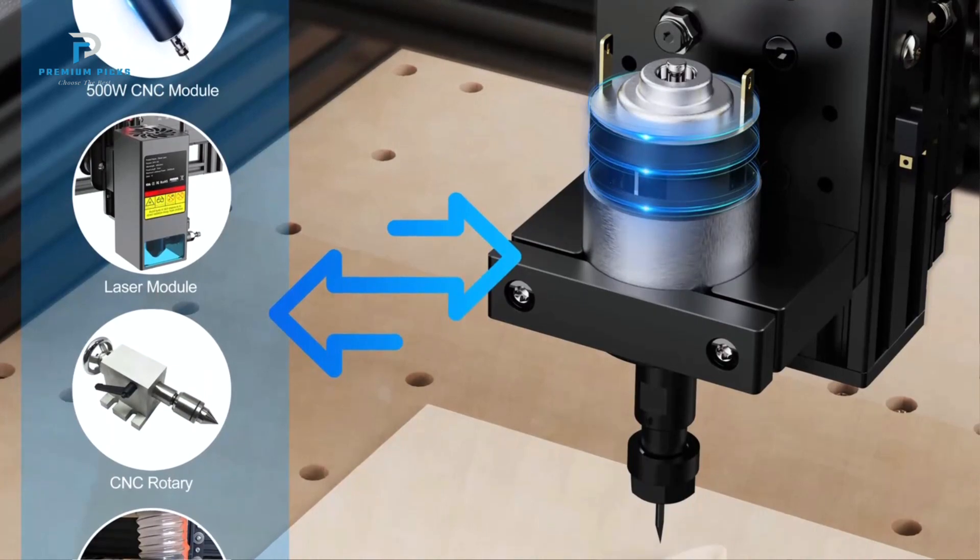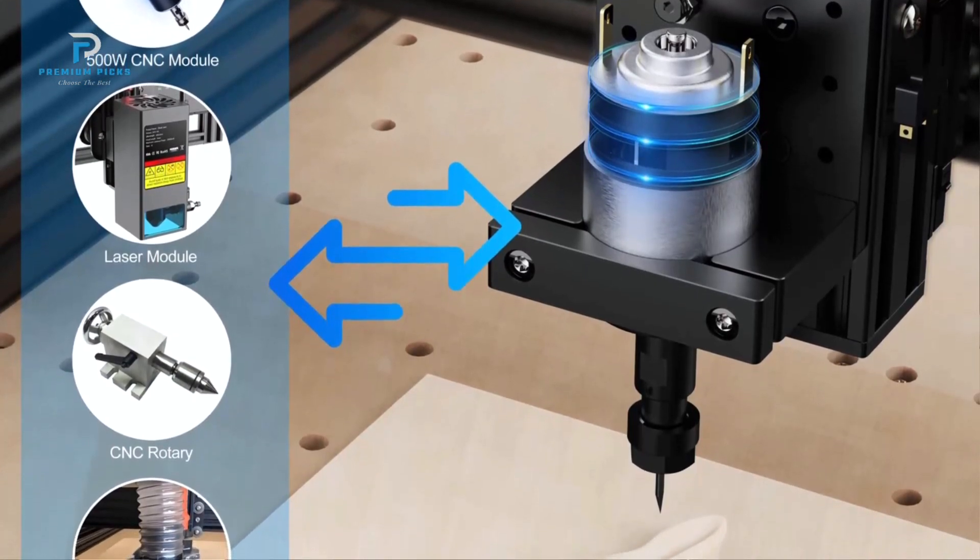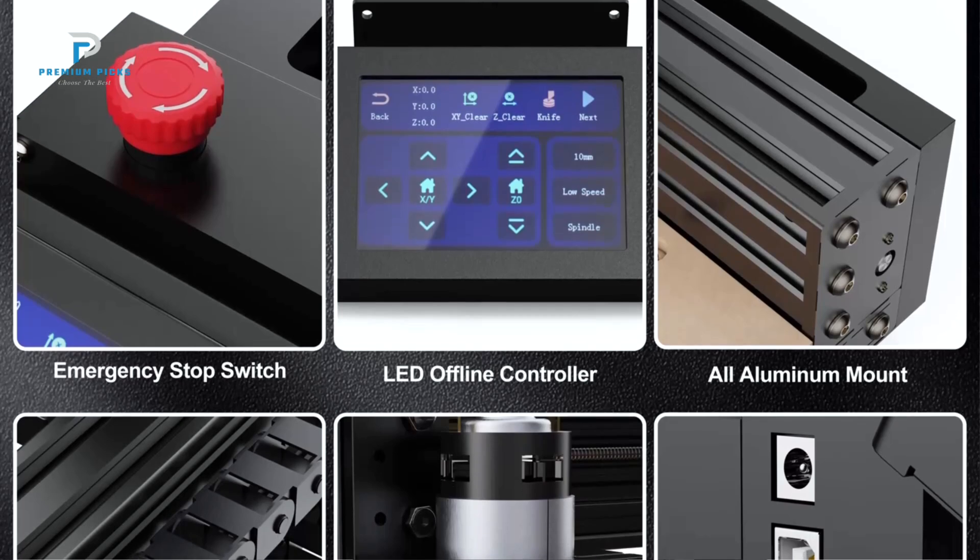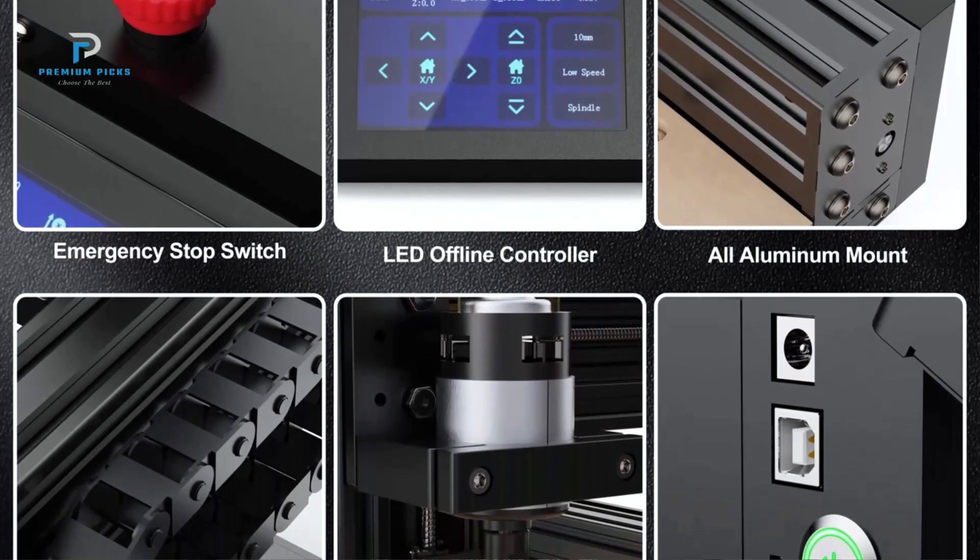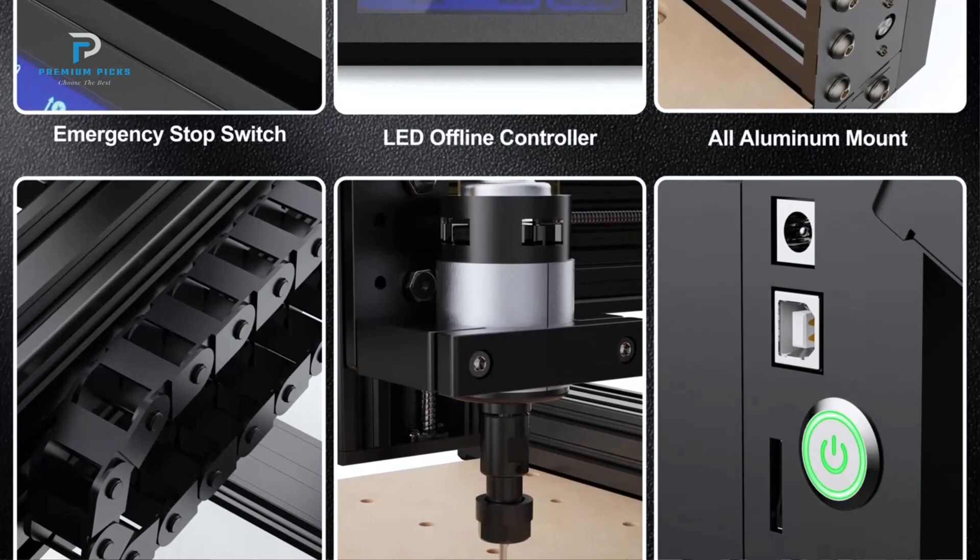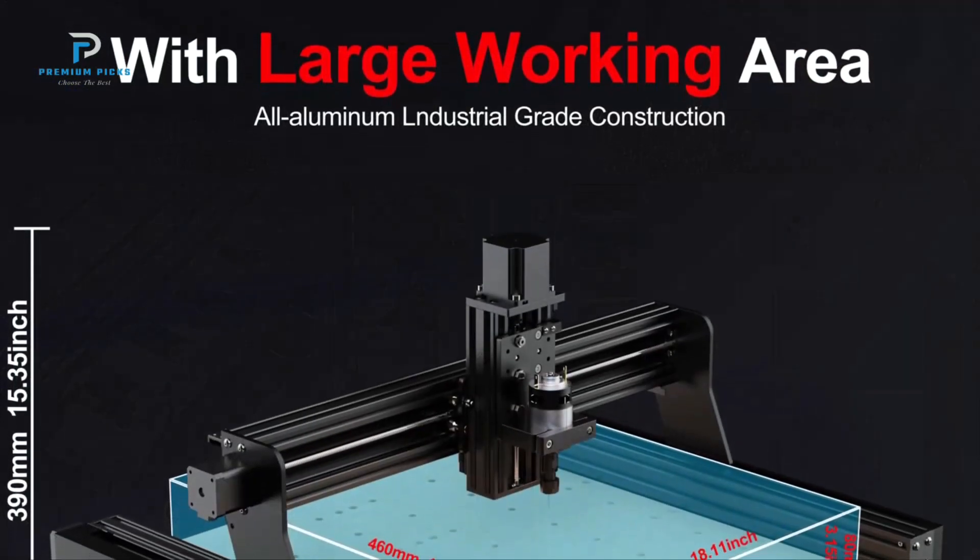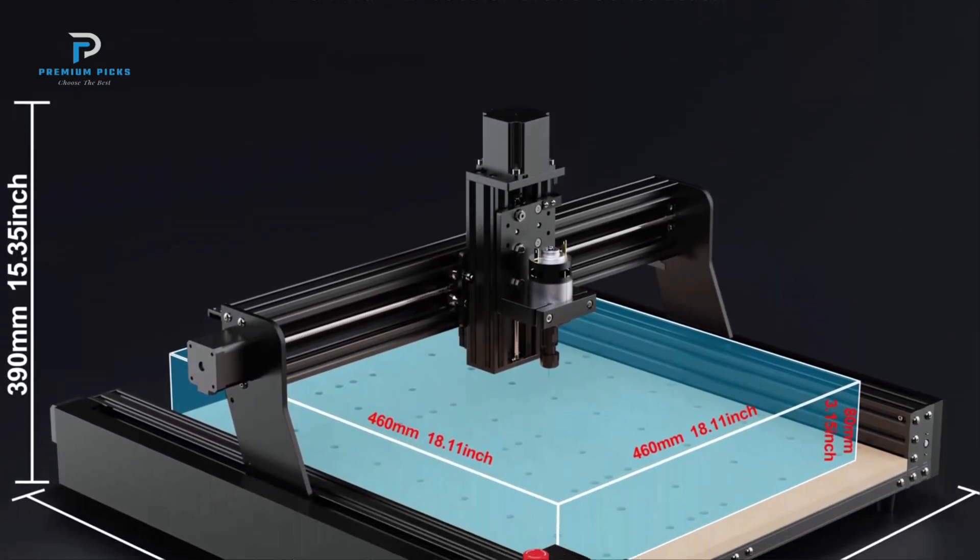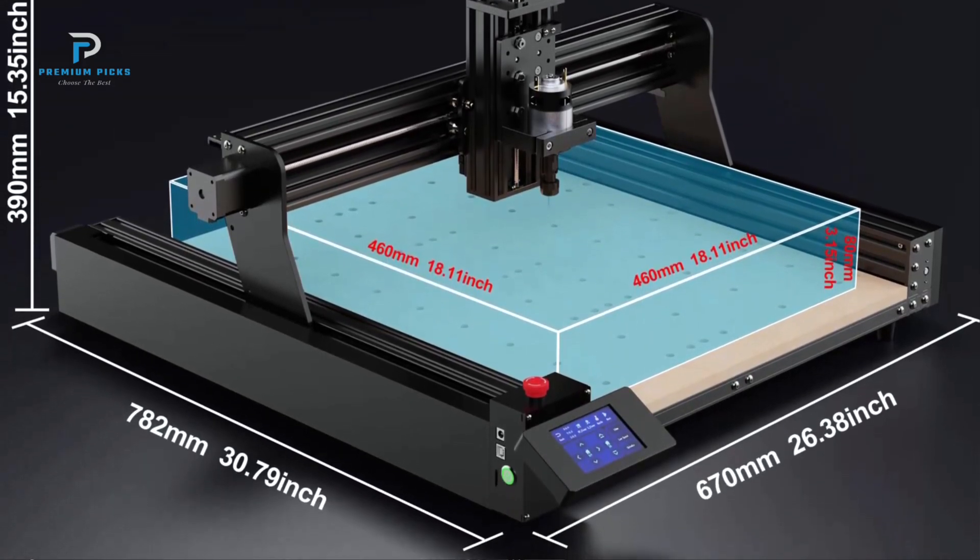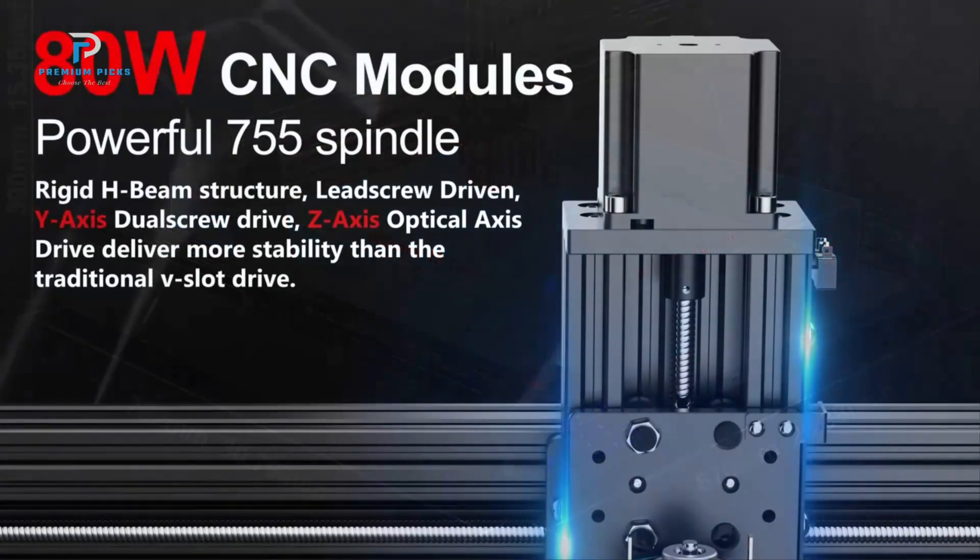All-metal Construction and Easy Assembly. Built with an all-metal structure, this CNC engraving machine ensures durability and strength. The machine is also 70% pre-assembled and features a modular design, making it easier to set up compared to other CNC machines. The assembly process is streamlined, which is ideal for users who want to minimize downtime and get started on projects quickly.